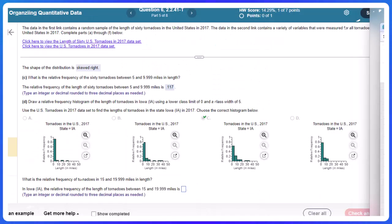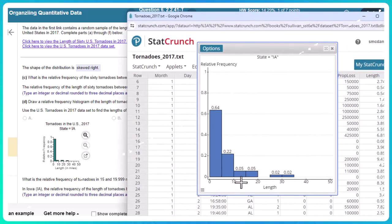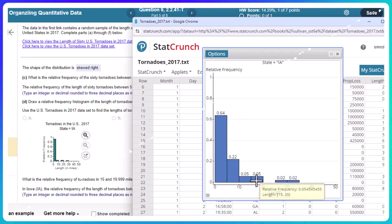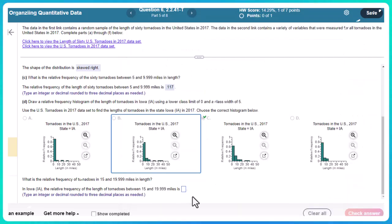And then it says, what is the relative frequency of tornadoes in 15 and 19.999 miles in length? So basically because I put those bars there, right, it's going to give it to me 0.05. We are rounding to three places though, so that could mess you up. There's between 15 and 20. So 0.055, I would need another decimal place there.